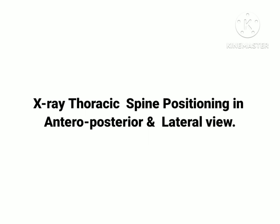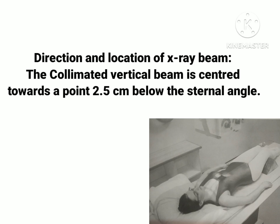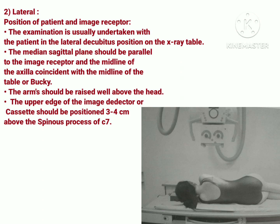Now let's move to our main topic — positioning in anterior posterior and lateral view of X-ray thoracic spine, discussing them one by one. For the anterior posterior view: the patient is in supine position on the X-ray table, and the medial sagittal plane or midline of the body is perpendicular on the X-ray table top. The upper edge of the image detector or X-ray cassette is placed just below the prominence of the thyroid cartilage. Exposure is taken on inspiration. The vertical collimated beam is centered towards 2.5 cm below the sternal angle — the point where the costal cartilage and second rib join with the sternum.